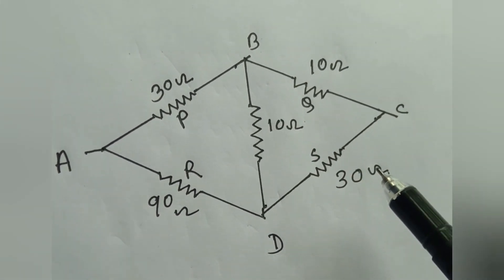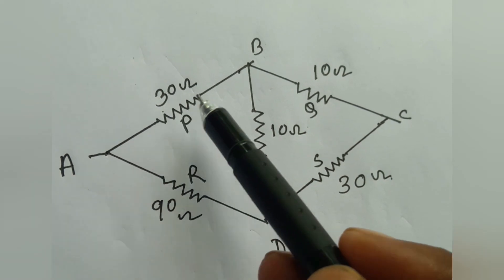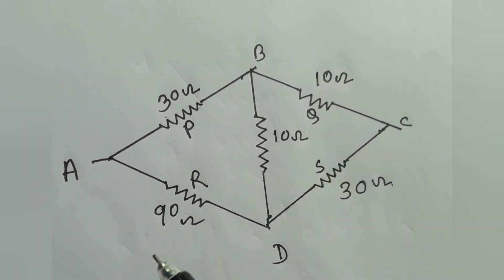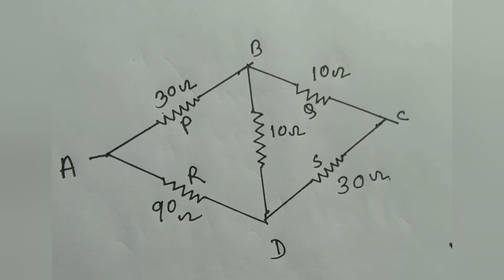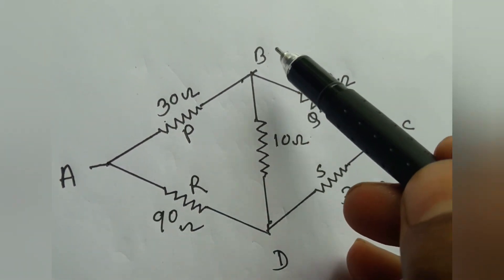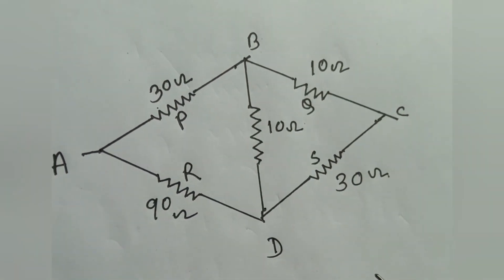Then we can omit this resistance of 10 ohm. Here you see that 30/10 and 90/30 are equal, therefore we can omit this 10 ohm resistance.